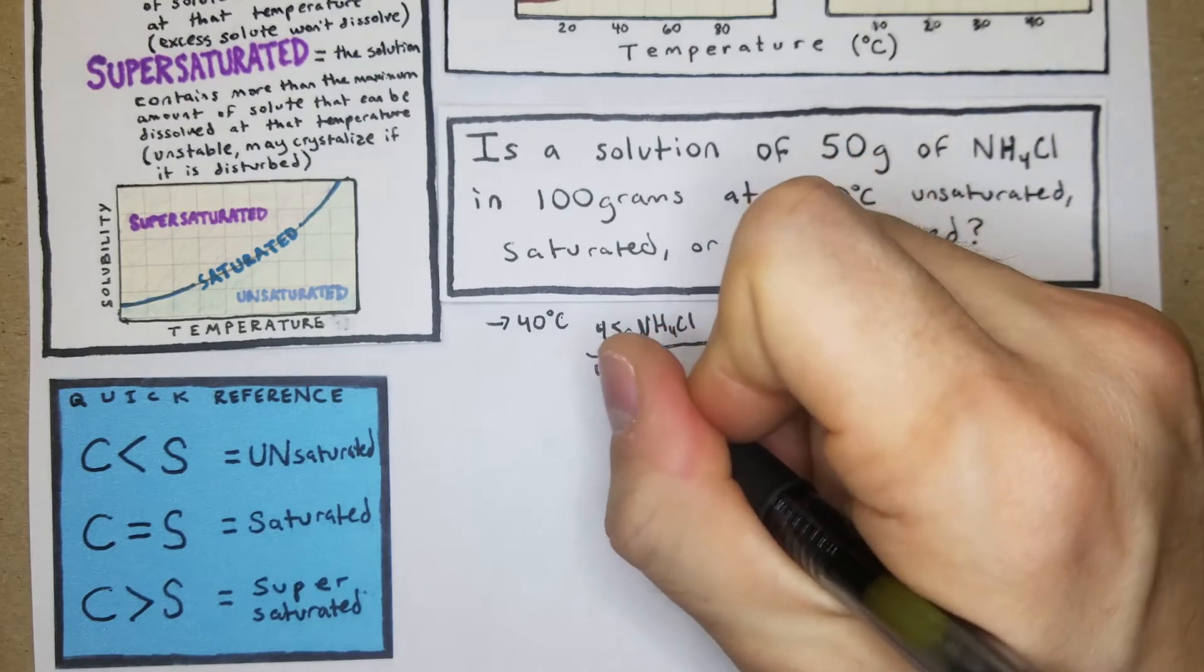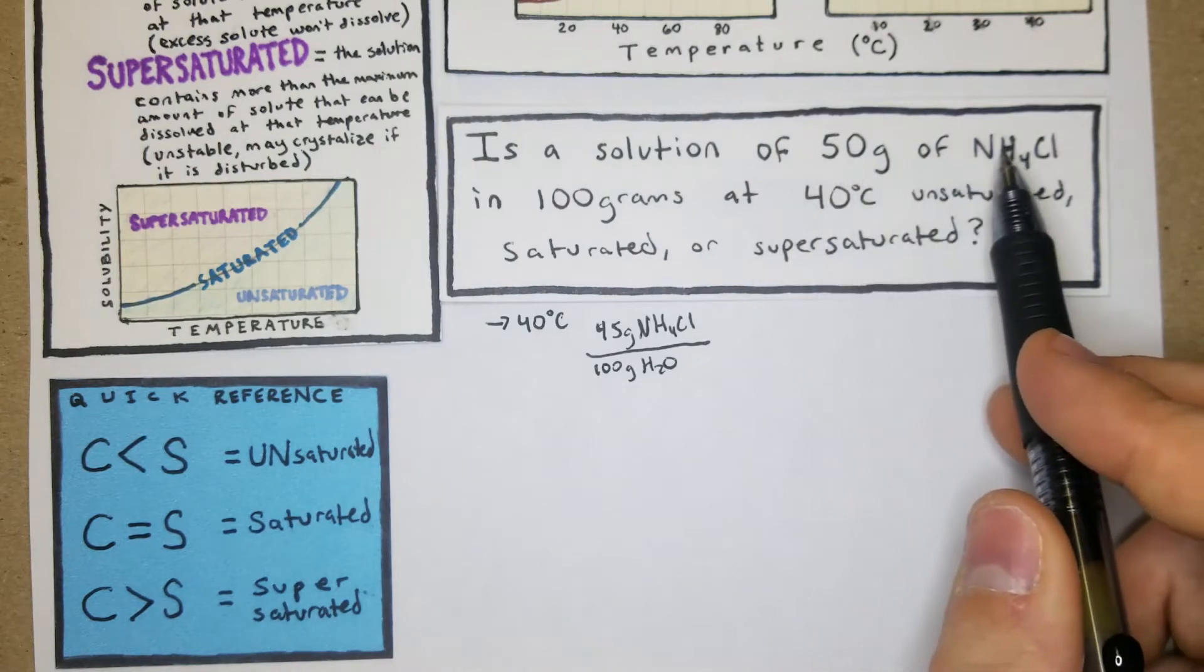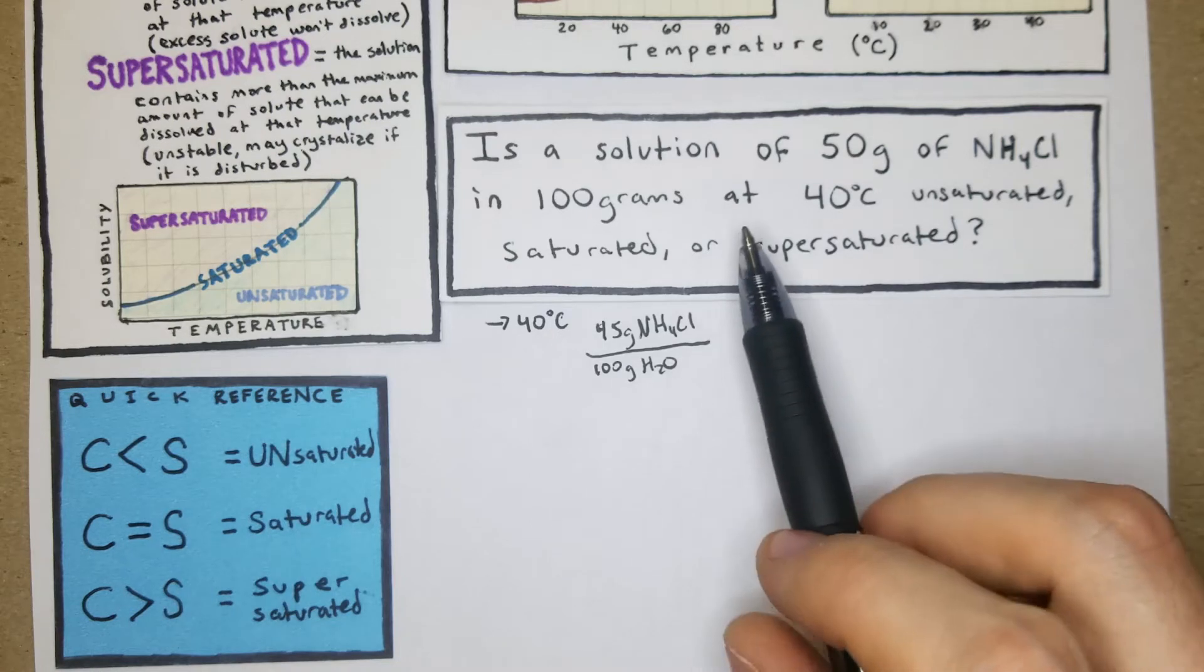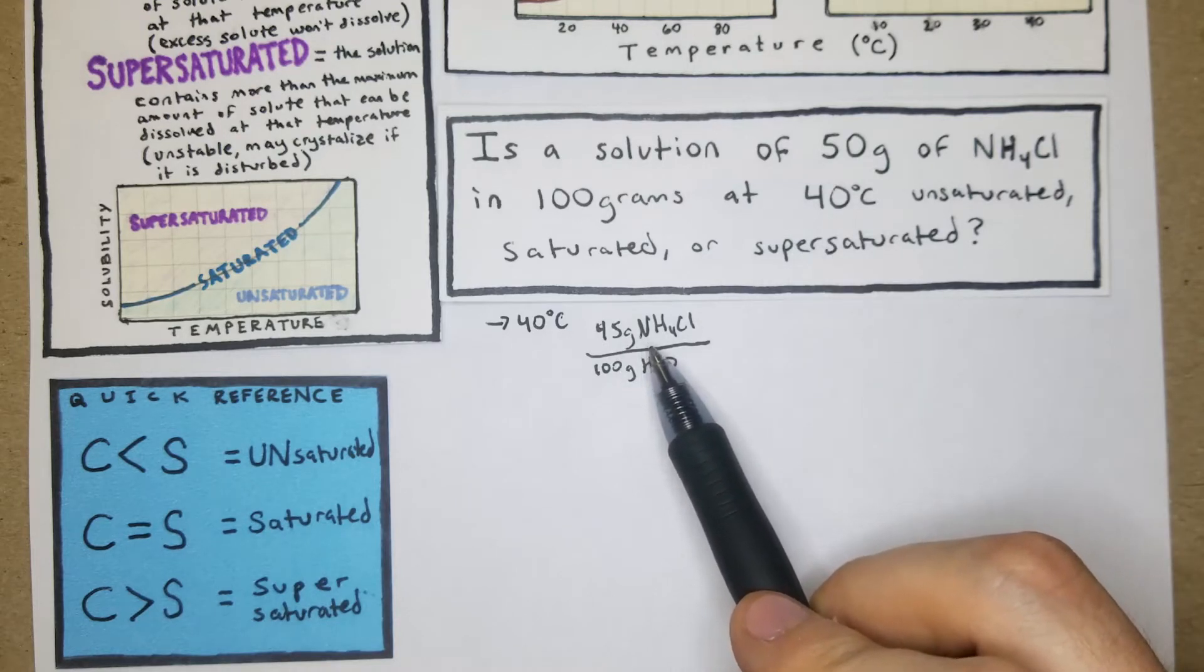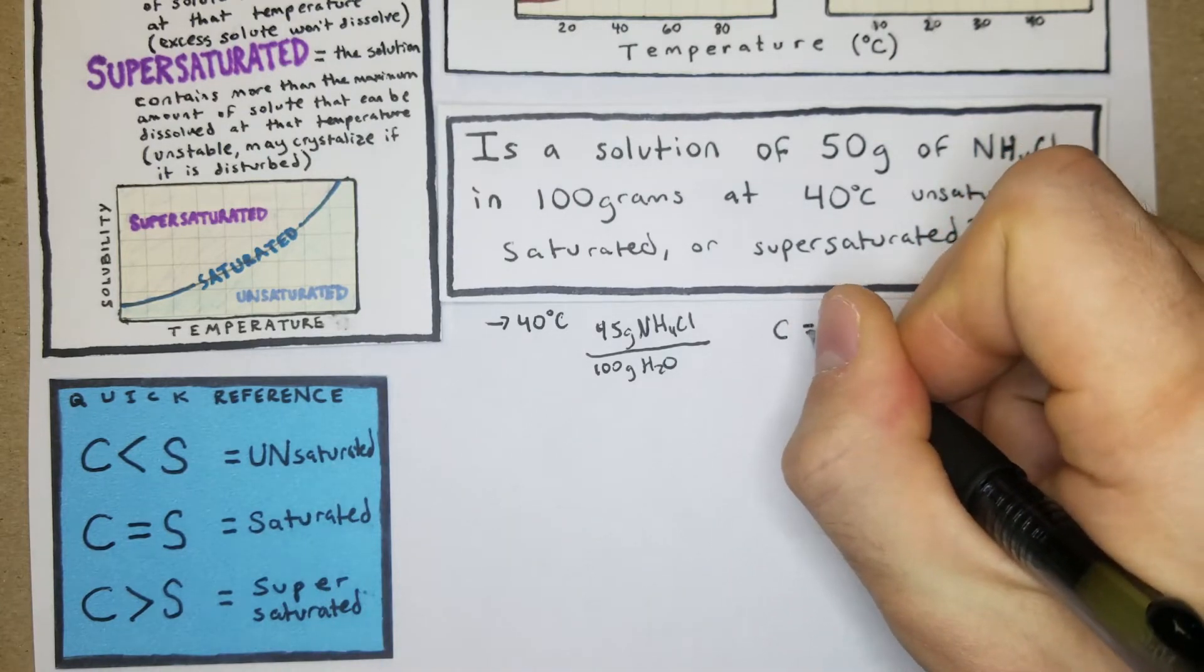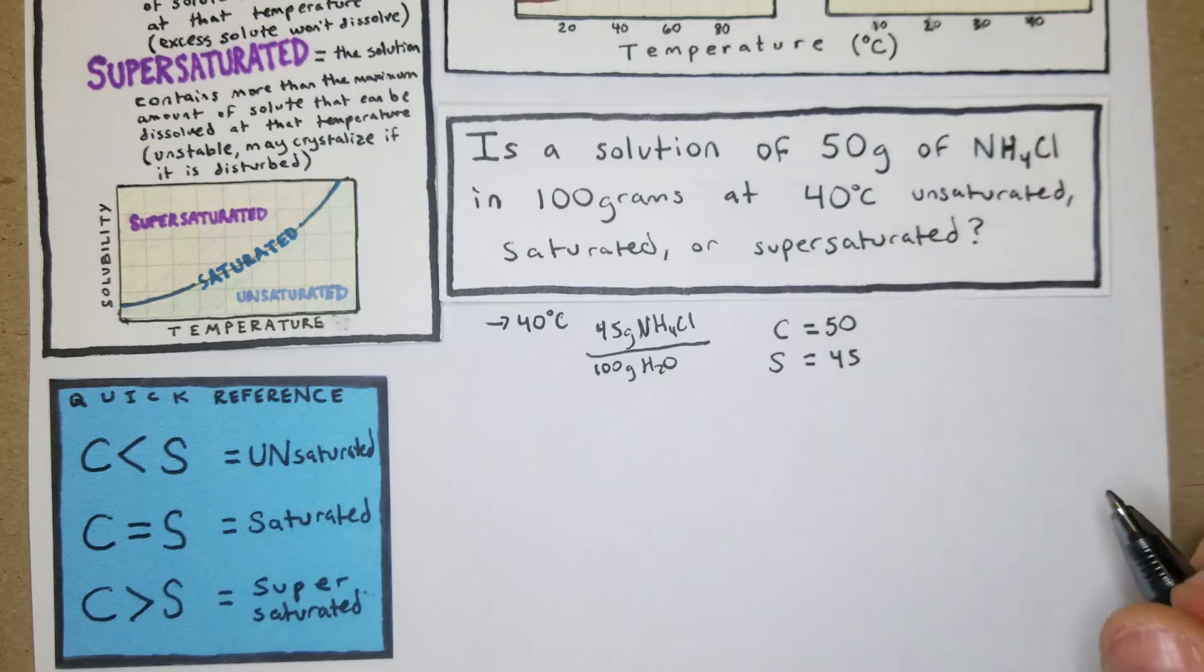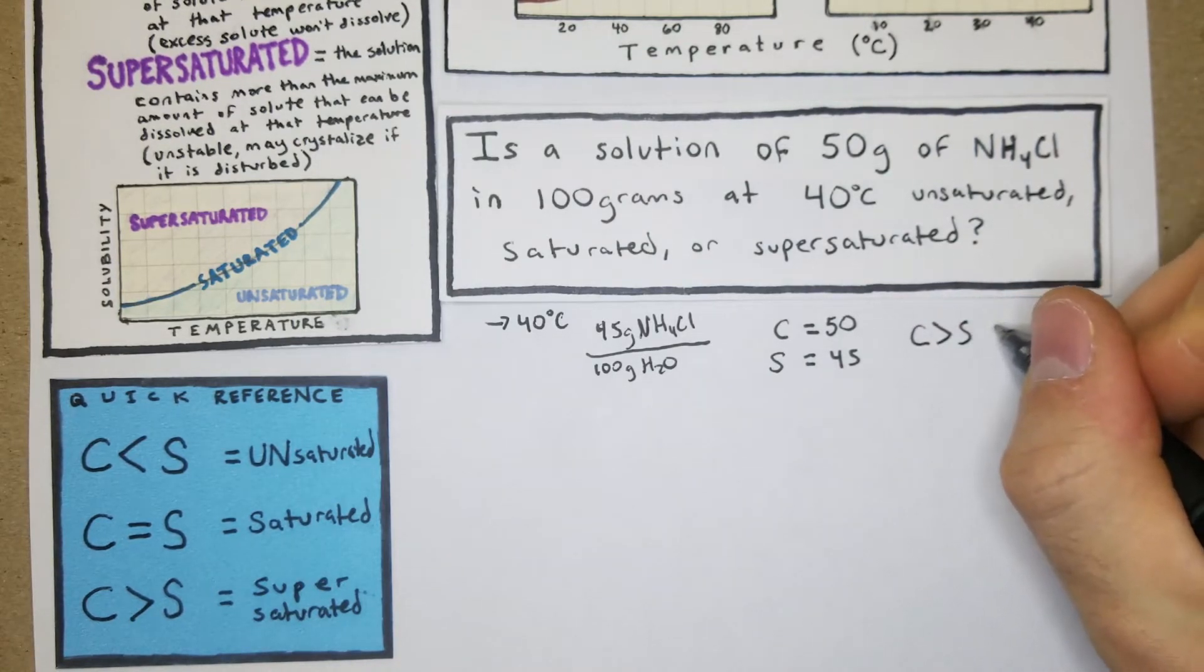It says the solution is 50 grams of NH4Cl in 100 grams of water at 40 degrees. That's pretty easy because it gives us the 100 grams of water, we can compare directly. The solution is 40 degrees which should allow up to 45 grams to dissolve, but 50 have dissolved. The concentration is 50 grams but the solubility allows for 45, so C is greater than S, which makes it supersaturated.